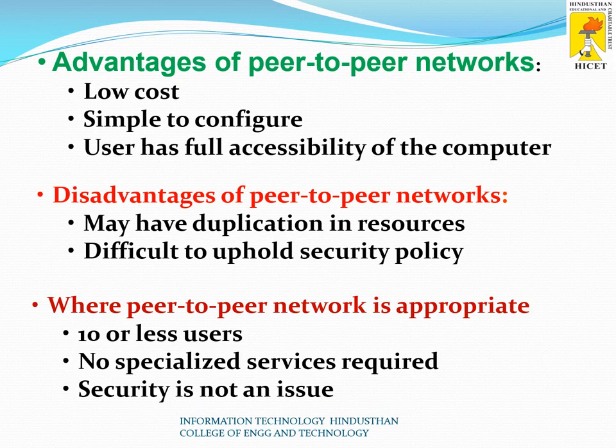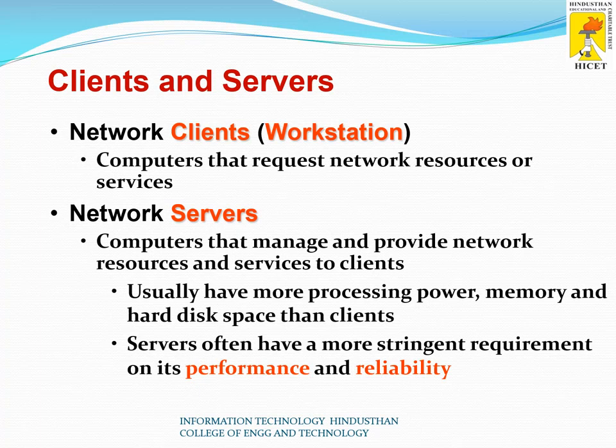Where can we use peer-to-peer networks? First, in a place where 10 or fewer users are present. Second, where no special or specialized services are required — only some consistent services are sufficient. Third, where security is not an issue. These are the three cases where we can use a peer-to-peer network.